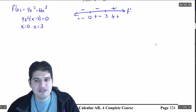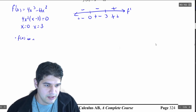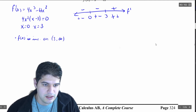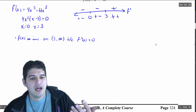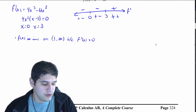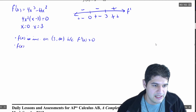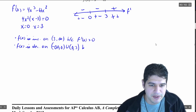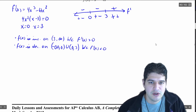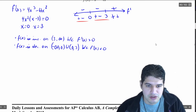We can say things about f because we know things about f prime. So f of x is increasing on three to infinity, because f prime of x is greater than zero for all values between three and infinity, as we can see from the sign chart. And f of x is decreasing on negative infinity to zero union zero to three, because f prime of x is less than zero on both of those intervals. We do have to exclude the zero point from that interval.